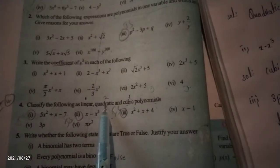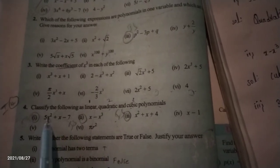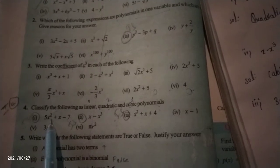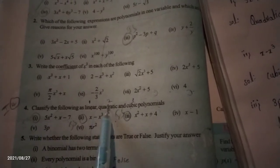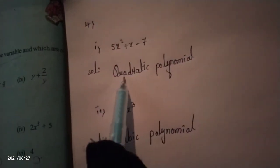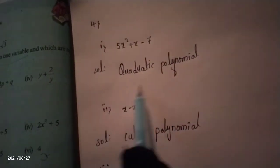The highest power is two, so which polynomial is it — linear, quadratic, or cubic? Power two means it is a quadratic polynomial. If the highest power is one then it is linear; if the highest power is three then it is cubic. Here the highest power is two, so the answer is quadratic polynomial.